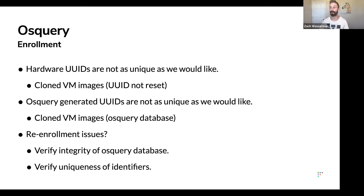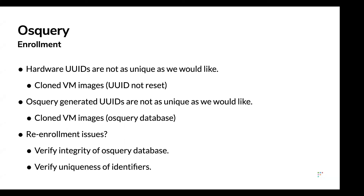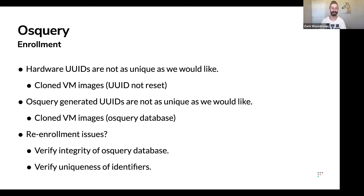We've had a bunch of different solutions for this which mostly work now. The biggest issue was cloned VM instances sharing the same osquery database and node keys. What we normally do before enrolling is make a request to the server to check if UIDs match, and if not, reset everything. When UIDs are the same we find they tend to be predictable, so we blacklist a bunch of UIDs. We're also thinking about writing a UID to disk that osquery generates, but haven't found that necessary yet.